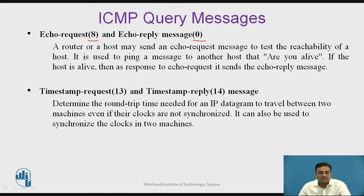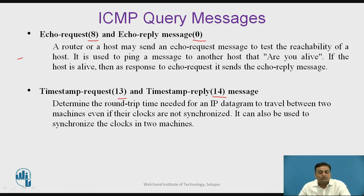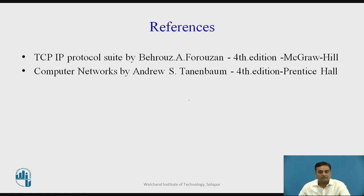The other type of query message is a Timestamp request and Timestamp reply. The type field contains value 13 for timestamp request messages and value 14 for timestamp reply messages. These timestamp messages are used to determine the round trip time needed for an IP datagram to travel between two machines, even if their clocks are not synchronized. With simple mathematical formulas, the round trip time can be calculated. Timestamp messages can also be used to synchronize the clocks of two machines.